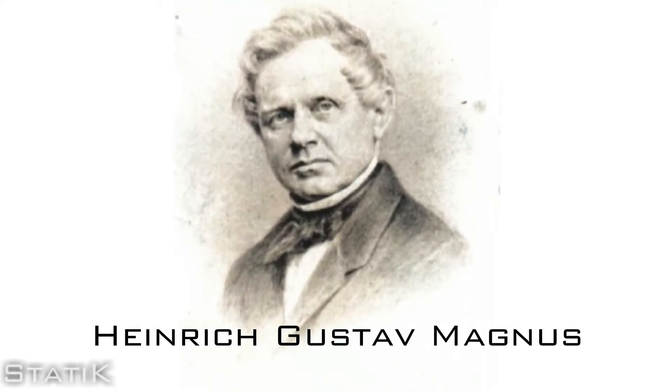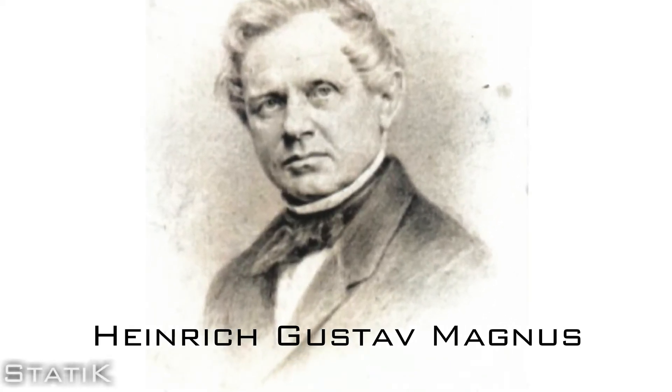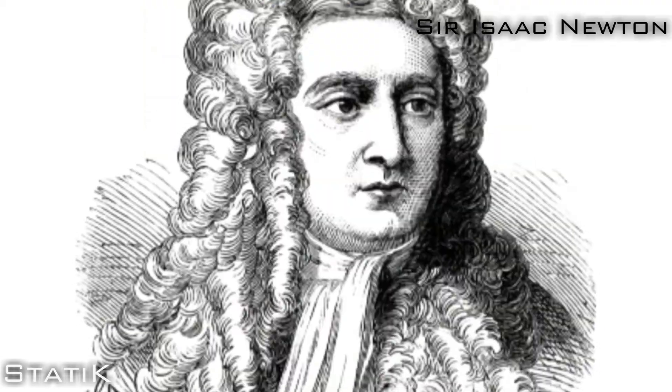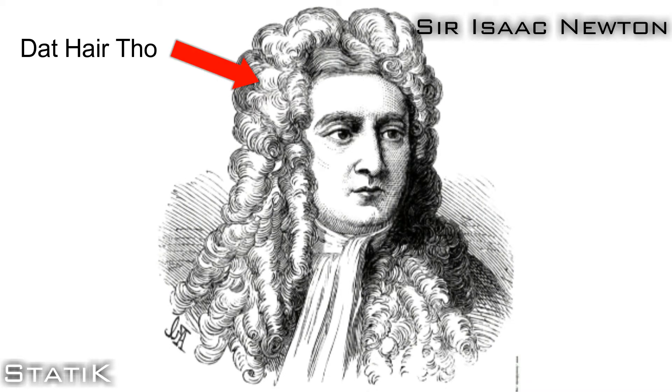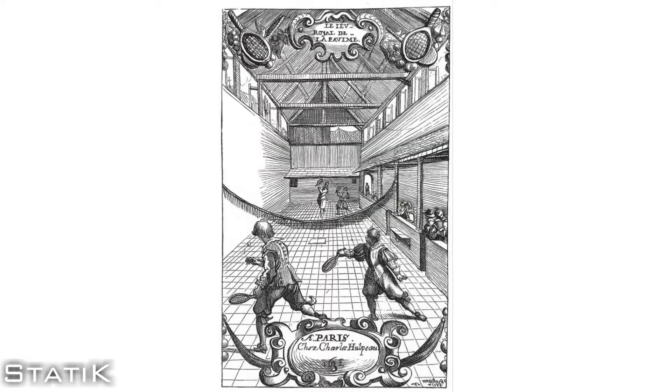Heinrich Gustav Magnus, the German experimenter, is credited with the discovery of the Magnus Effect, even though Sir Isaac Newton was actually the first to notice and describe it. The Magnus Effect was first noticed by the esteemed physicist during a tennis match at his home college of Cambridge.